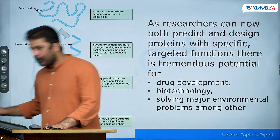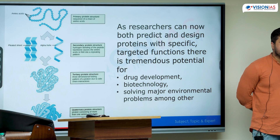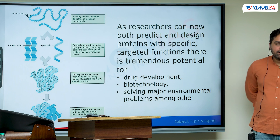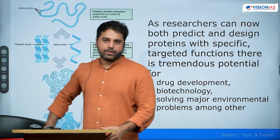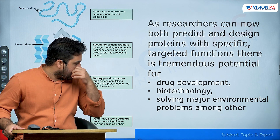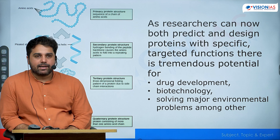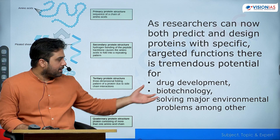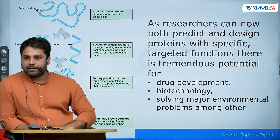This Nobel Prize in Chemistry is remarkable. Proteins do so many things in our body — proteins are antibodies, hormones, enzymes, and muscle. Because of that, the potential to find new proteins or predict the structure of a protein from its amino acid sequence — which allows us to design new proteins — has tremendous applications: in medicine development, in biotechnology, and in solving major environmental problems such as finding proteins that can degrade plastic or applications in energy storage.